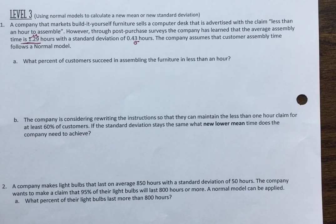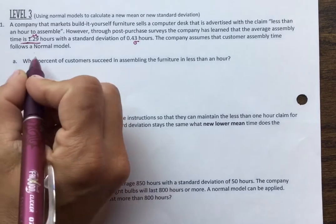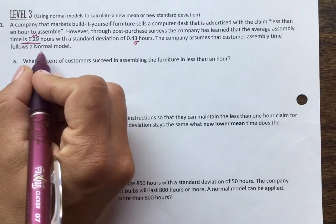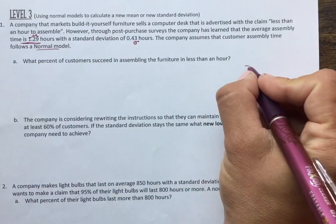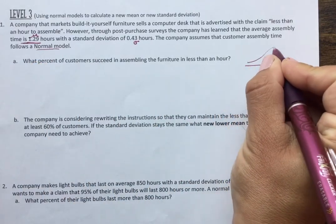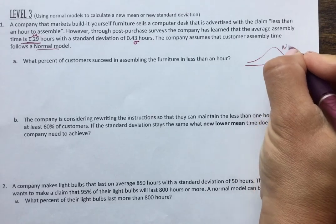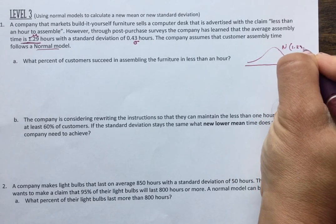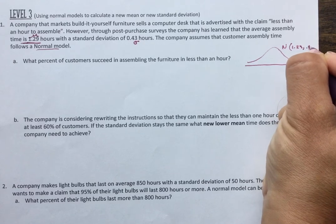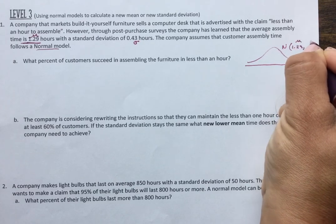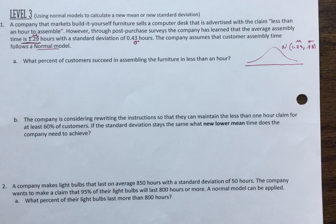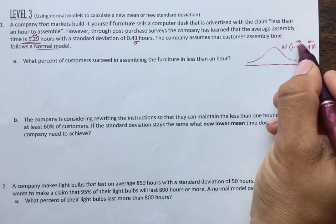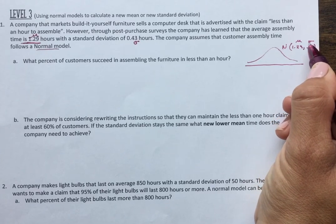The company assumes that the customer assembly follows a normal model. I read normal model and I'm going to sketch a normal model and label it with those things I just annotated. 1.29, 0.43 for my mean and my standard deviation. Give that information to the grader. Label things using notation. Mu is mean. Sigma is standard deviation.